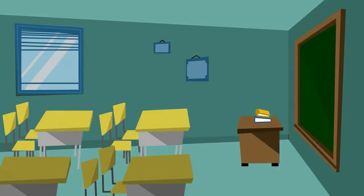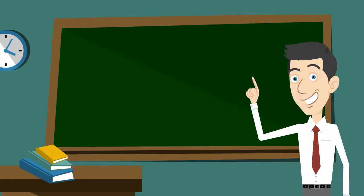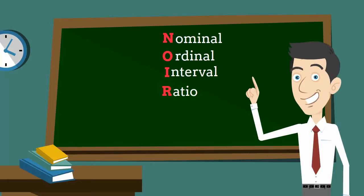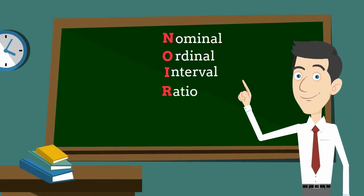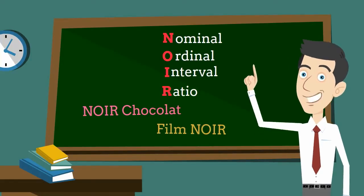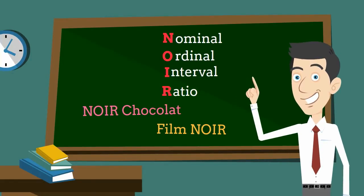Now you have understood all the four levels of measurement. Let's take a look at the mnemonic. If you take the first letter of this measurement, you've got N, O, I, R, which is actually a word in French which means dark or black. For example, noir chocolate, which is dark chocolate in French, and we also have film noir, which is a type of movie that is dark and moody.